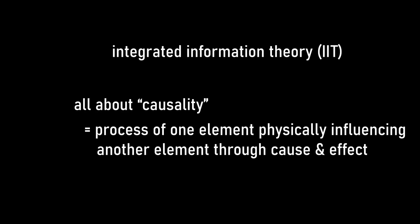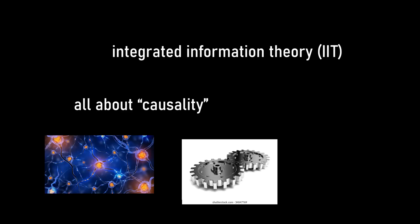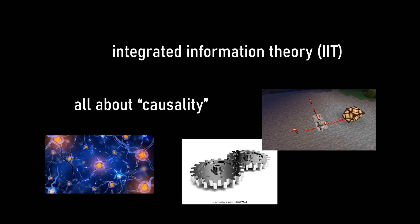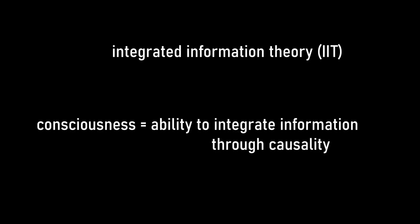So I think the most interesting theory regarding all that, which is also currently considered the most promising theory regarding consciousness as a whole, is the Integrated Information Theory, or IIT. The IIT is all about causality, which means the process of one thing physically influencing another thing through cause and effect. One neuron connected to another neuron, one gear connected to another gear, one redstone connected to another redstone. These are all examples of causality. The theory states that a system of physical elements is conscious if it is able to integrate information through causality.